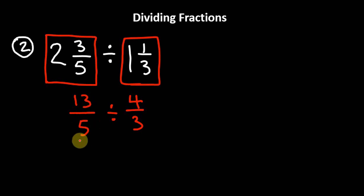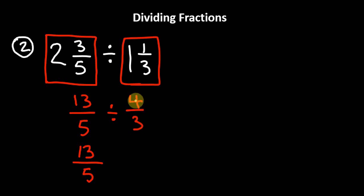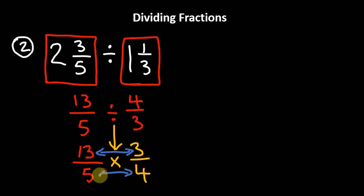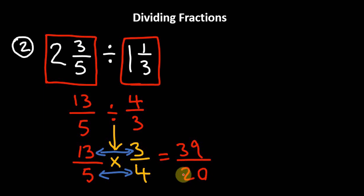Remember: when dividing, we keep the first fraction, 13 over 5. Dividing by the second fraction, 4 over 3, is the same thing as multiplying by the reciprocal of 4 over 3. So we change the sign to multiplication and flip 4 over 3 to become 3 over 4. Then we multiply the numerators: 3 times 13 is 39, and the denominators: 5 times 4 is 20. So the answer is 39 over 20. And that's pretty much how we divide fractions.